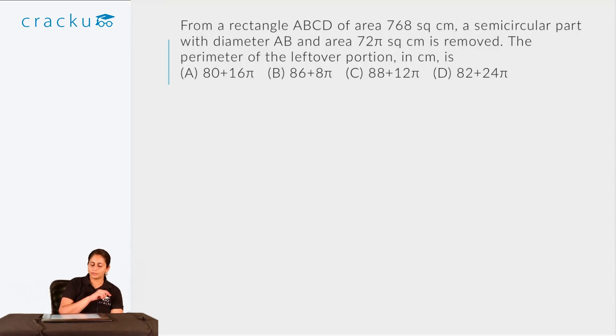Let's take a look at one of the questions that came in CAT 2018. From a rectangle ABCD of area 768 square centimeters, a semicircular part with diameter AB and area 72π square centimeters is removed. The perimeter of the leftover portion in centimeters is—so let's first draw this out. You have ABCD like this, and using AB as the diameter, a semicircular part of this is removed. I'm assuming this is the diameter, so it will be like this.